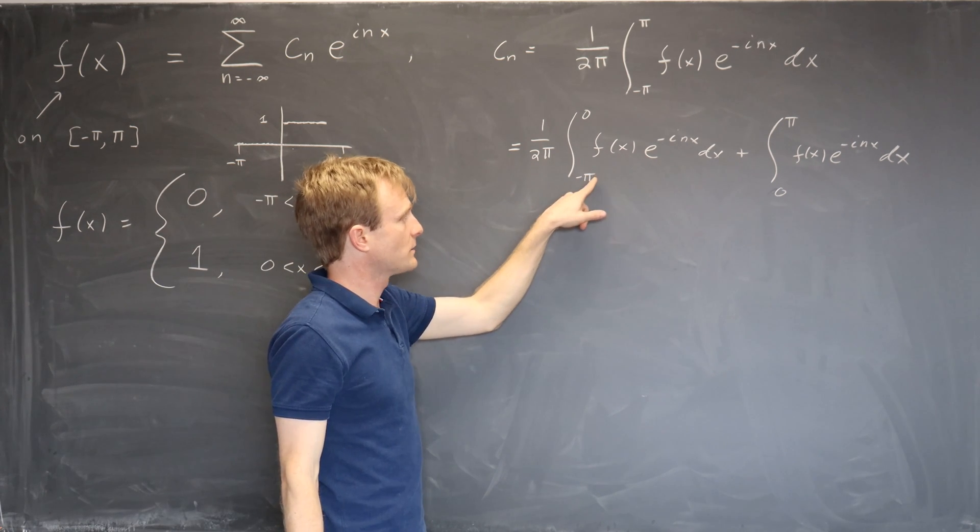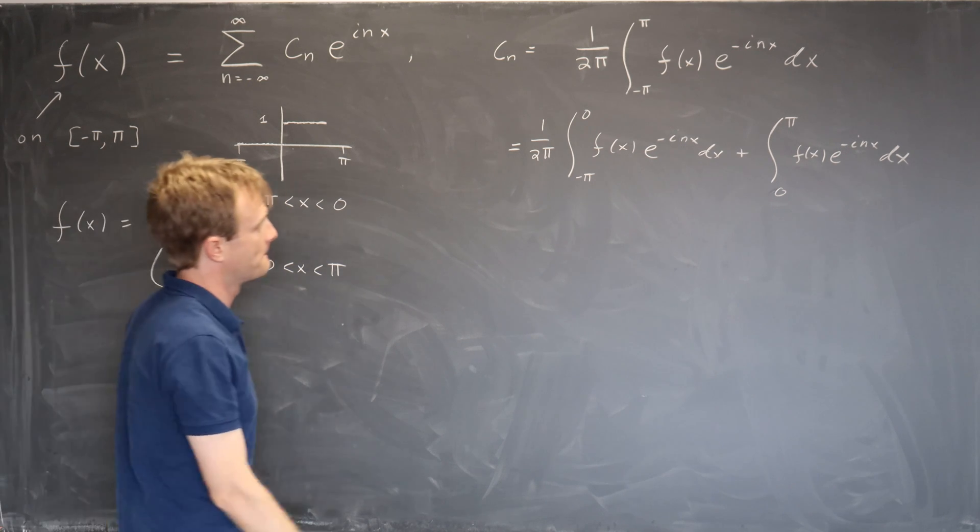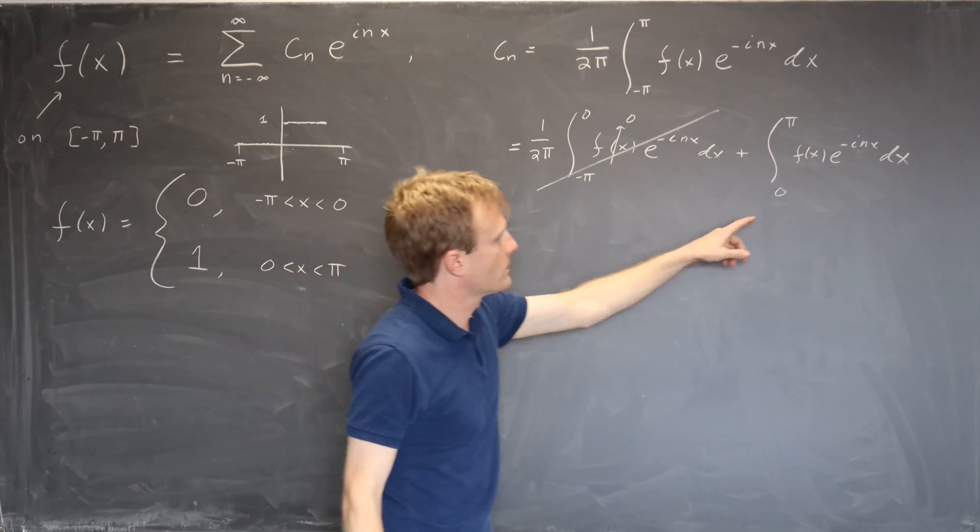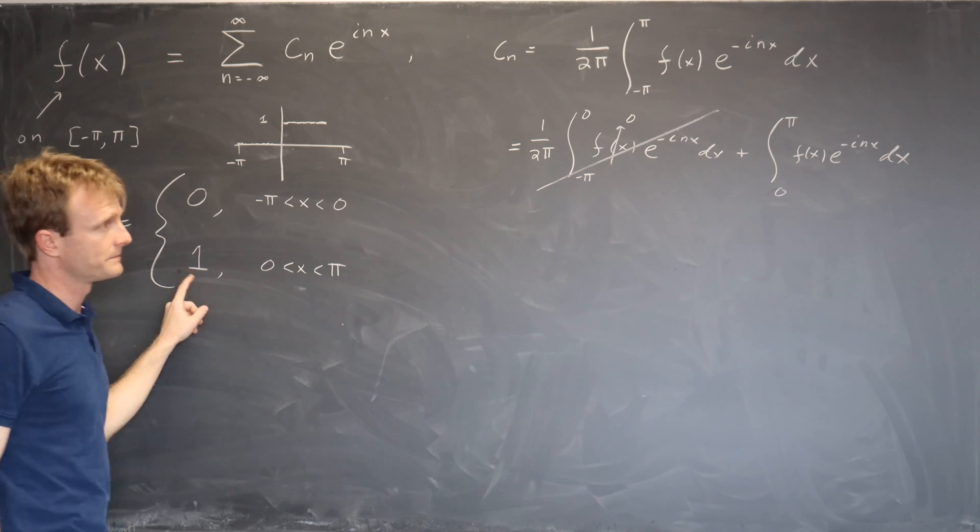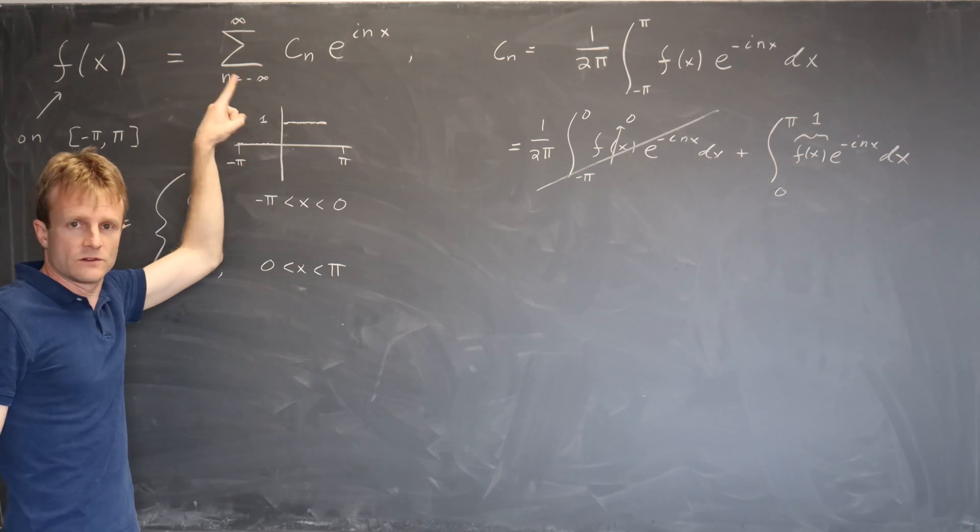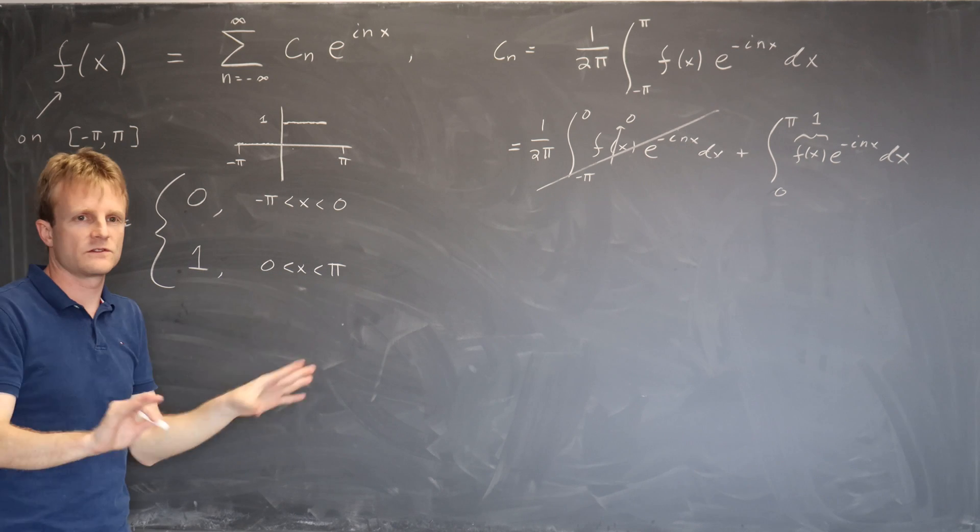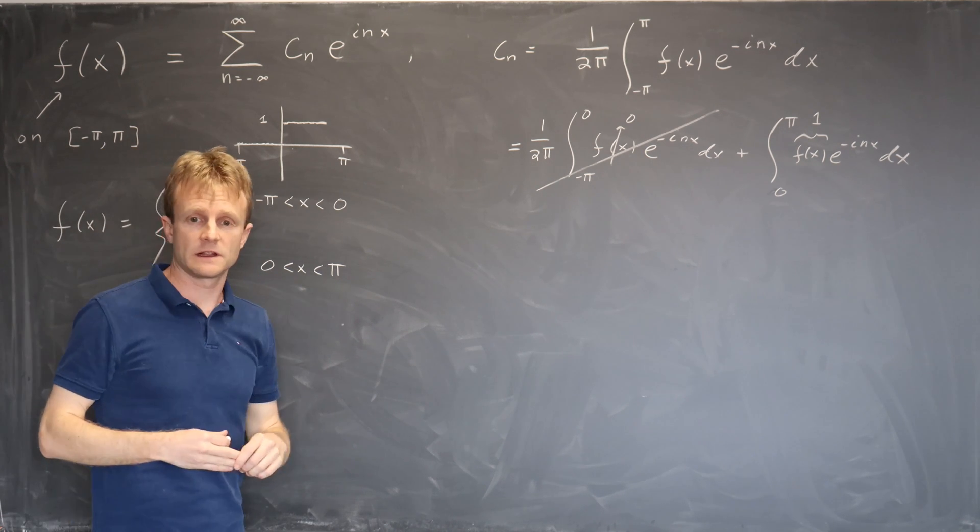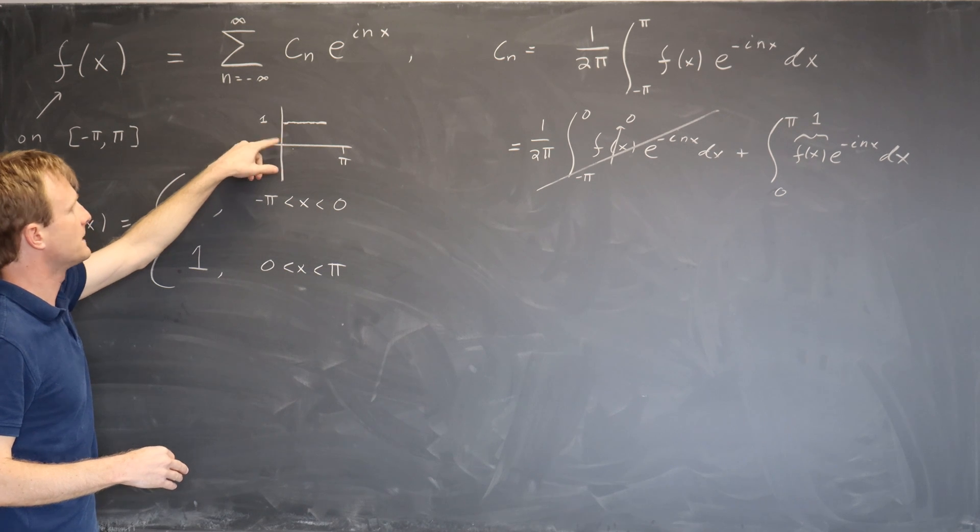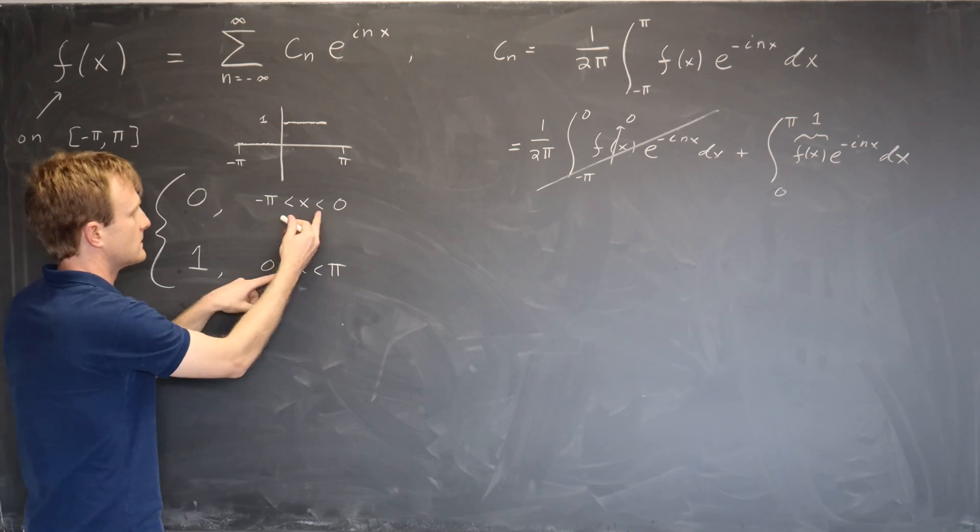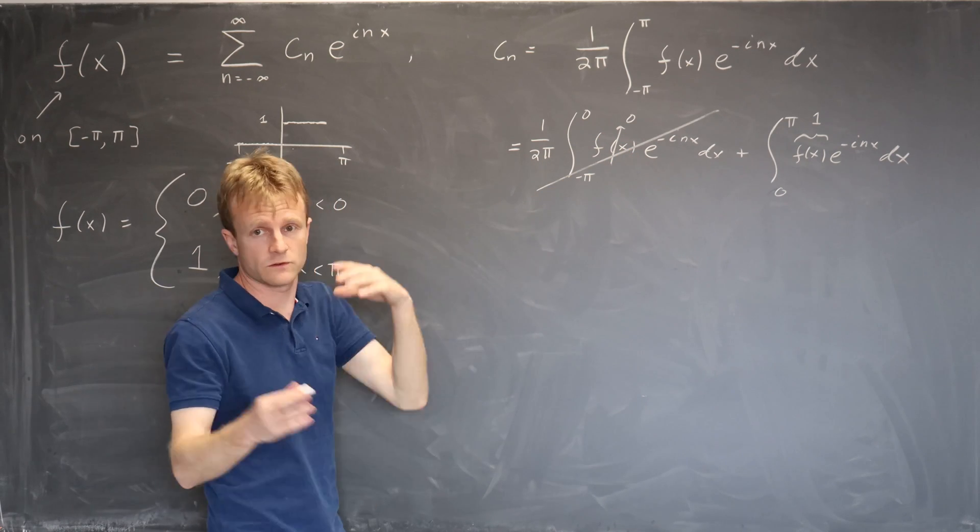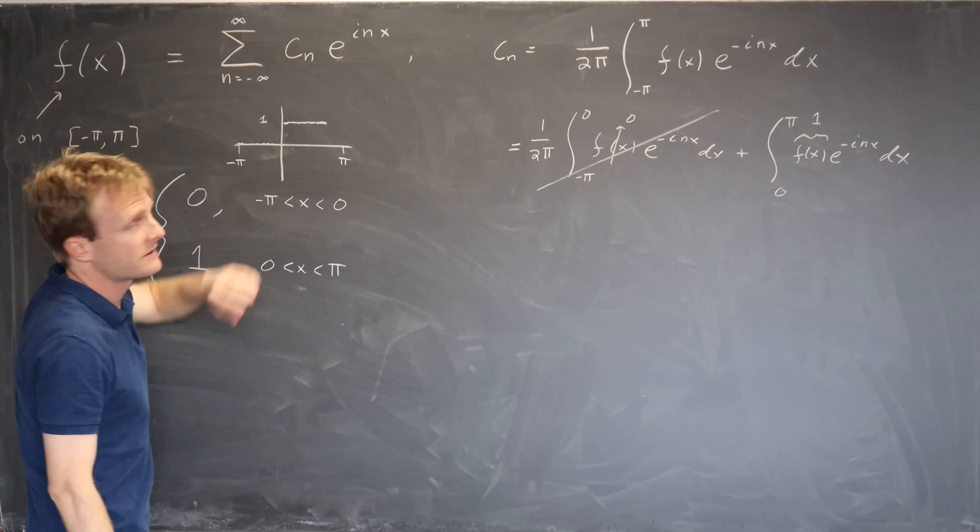But this is useful for our particular function f(x) because it comes in two separate pieces. So in this integral we only have a range from minus pi to 0 where f(x) is 0, so this term doesn't contribute at all. And in this second integral we range from 0 to pi where f(x) is 1. Now don't let the point of discontinuity concern you. The Fourier series doesn't care what value we assign the function there. Integrals don't care about sets of measure 0.